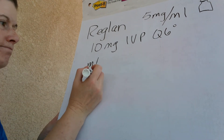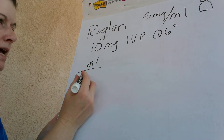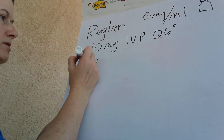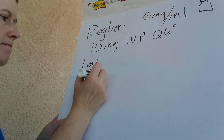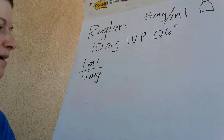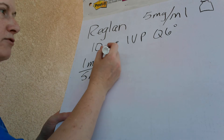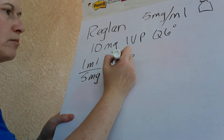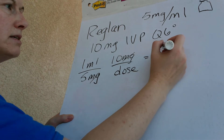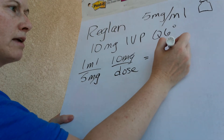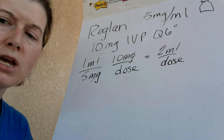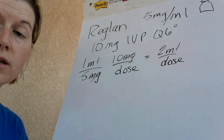We want mLs, and we know that 1 mL equals 5 milligrams. We're going to give 10 milligrams per dose. We cross out the milligrams, and this gives us 2 mLs per dose. So if I draw up 2 mLs in my syringe, I'm going to have 10 milligrams of Reglan.